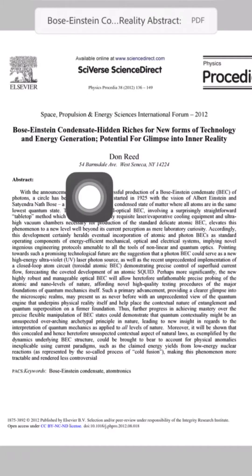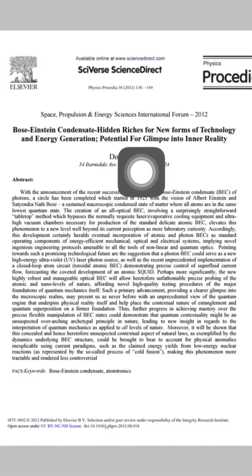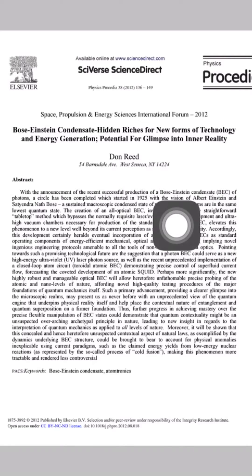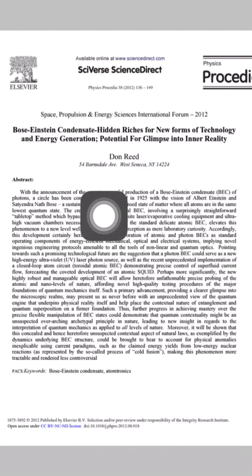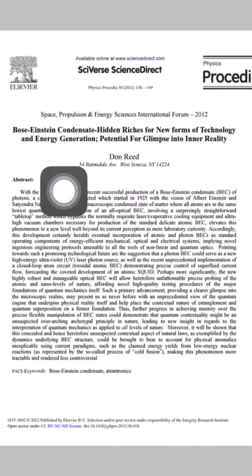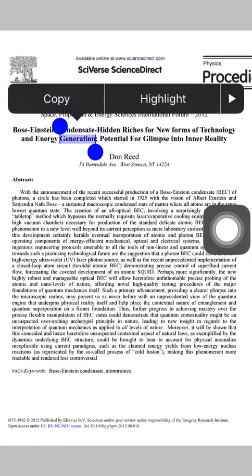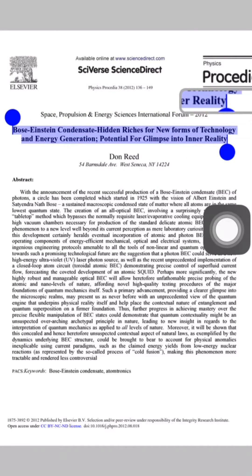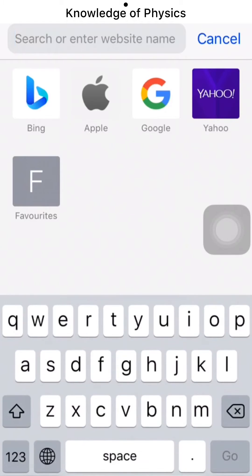Hello, this is a research paper on the topic of Bose-Einstein condensate, and I forgot to download the citation or reference for this paper. In this video, I will be showing you how to get the citation or references of this research paper from Google Scholar. For that, let's copy the title of this research paper.